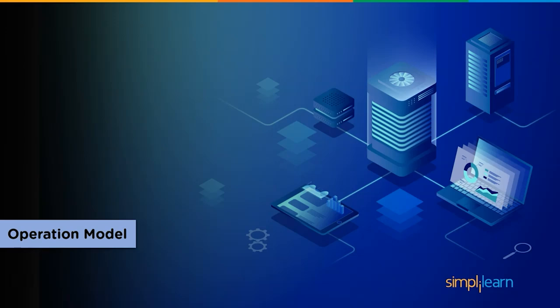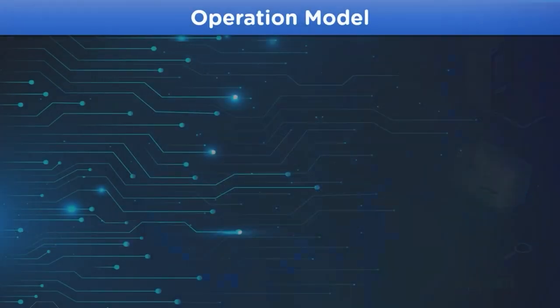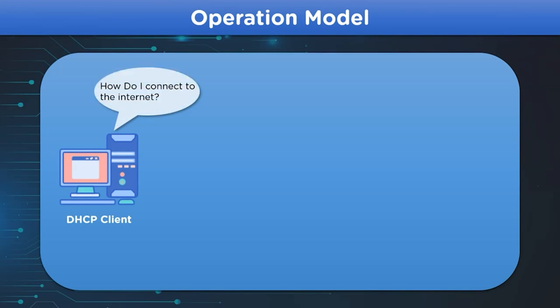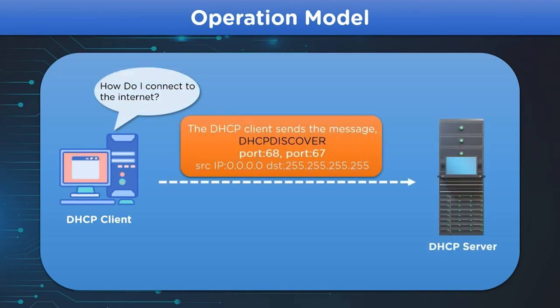Now let's take a look at the operation model for the DHCP protocol. DHCP operations are performed under User Datagram Protocol — UDP — which is applied on two ports: 67 and 68. The first phase is where the client broadcasts a DHCP discover message over the network to connect with the DHCP server, basically meaning it wants to connect to the internet through the DHCP server.